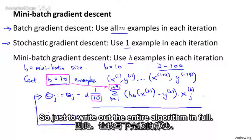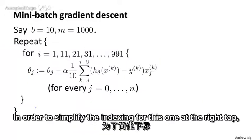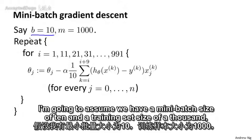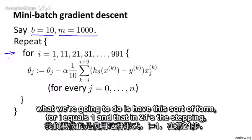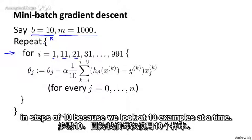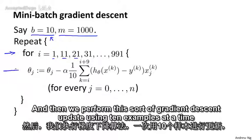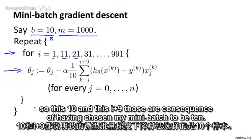So just to write out the entire algorithm in full, in order to simplify the indexing for this, I'm going to assume we have a mini-batch size of 10 and a training set size of 1000. What we're going to do is have this sort of for loop for i equals 1, 11, 21, stepping in steps of 10 because we look at 10 examples at a time. And then we perform this sort of gradient descent update using 10 examples at a time. So this 10 and this i+9, those are a consequence of having chosen my mini-batch size to be 10.